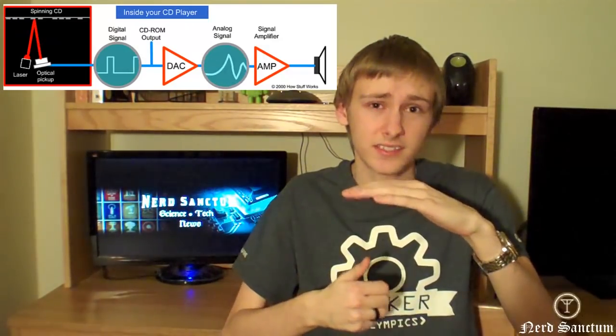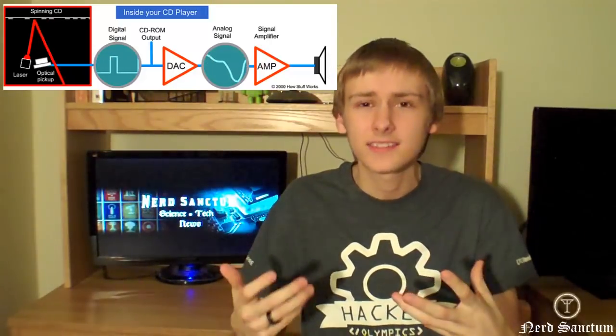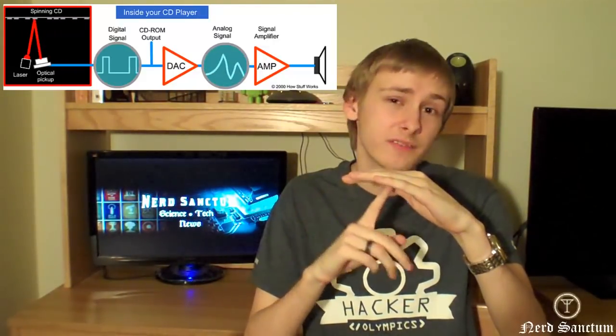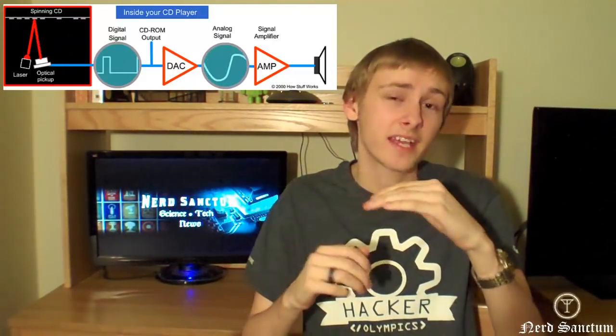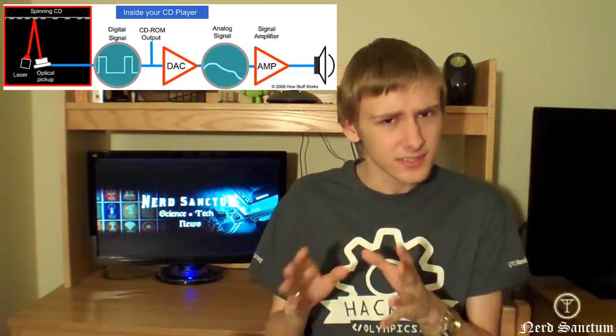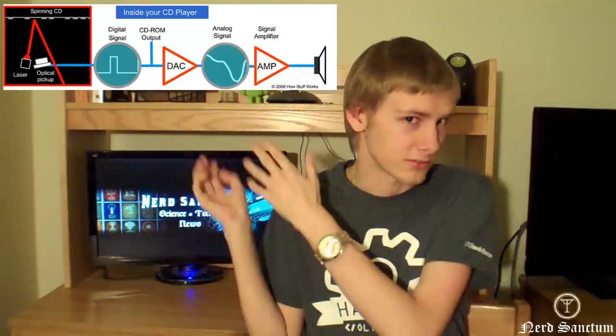Now let's look at how we turn those physical bumps on a disc into digital signals. When a disc reading device shoots a laser onto a disc, if it hits a flat reflective surface, it simply bounces that laser beam back towards the sensor. That sensor picks up the light and registers binary one — we're getting a signal. If instead the laser hits a bump, since that bump is not reflective, the light goes back at a different angle and the sensor can't pick up the signal, so it registers binary zero. From this series of flat surfaces and bumps, we get a series of ones and zeros digitally.